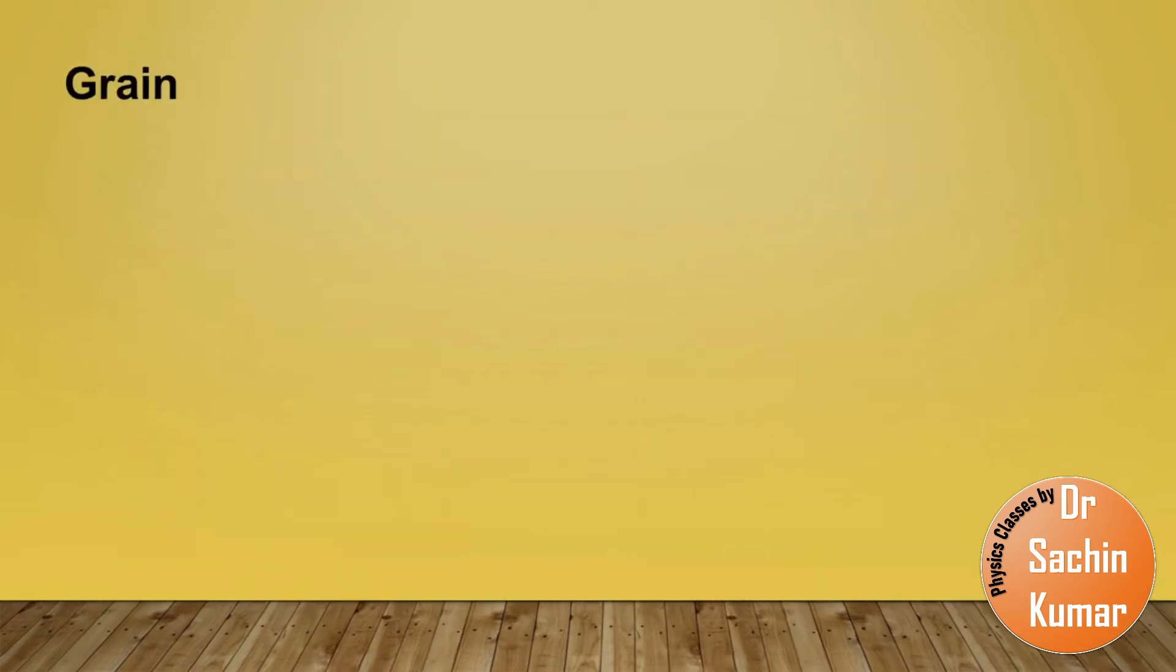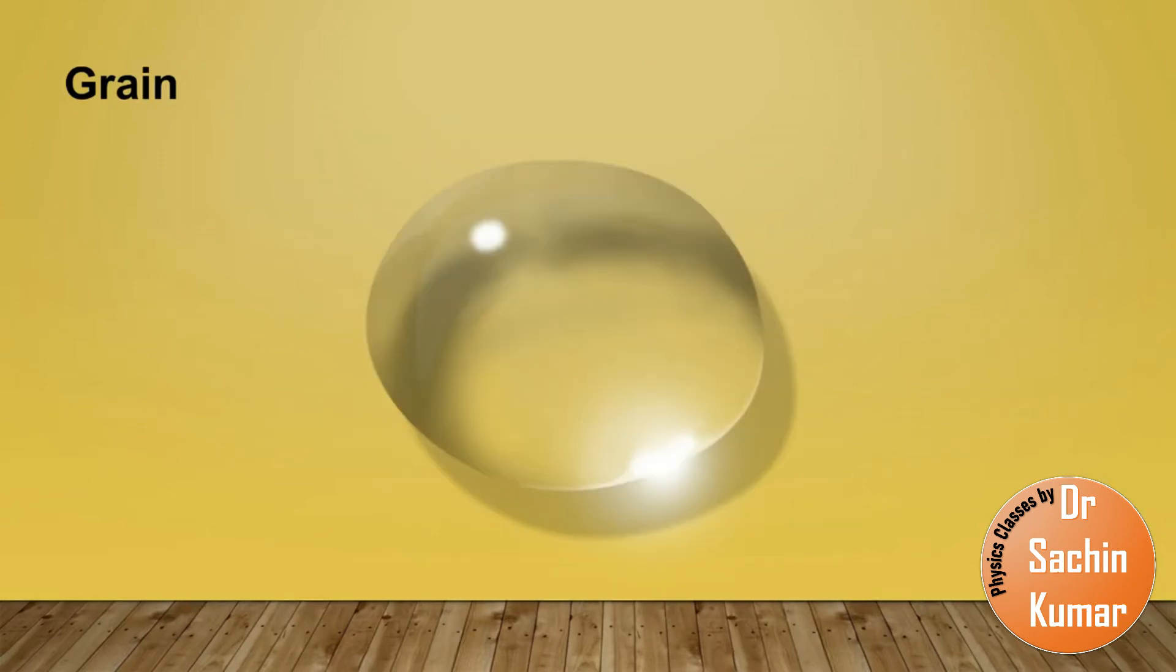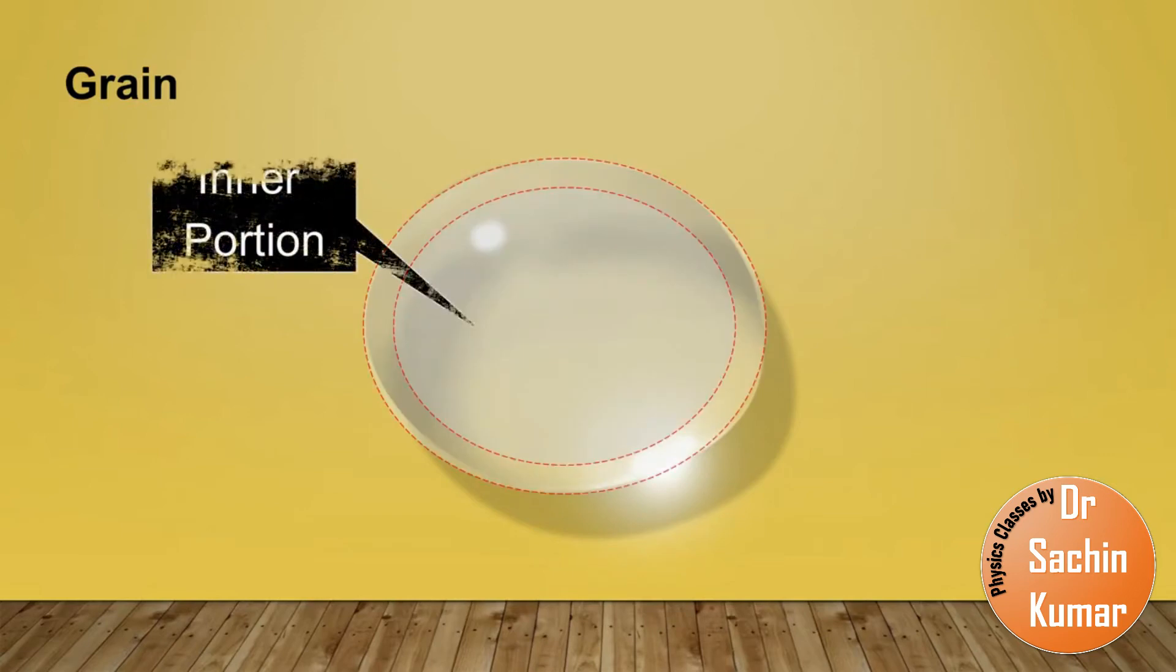To understand the definition of grain, let us first take an example of a liquid drop. This is the shape of a liquid drop under the effect of gravity. Let us pick one of the drops. Now how would you define a drop? If you know some science about surface tension, you must know that a liquid drop in itself has two portions: one is the inner portion and second is the outer surface.